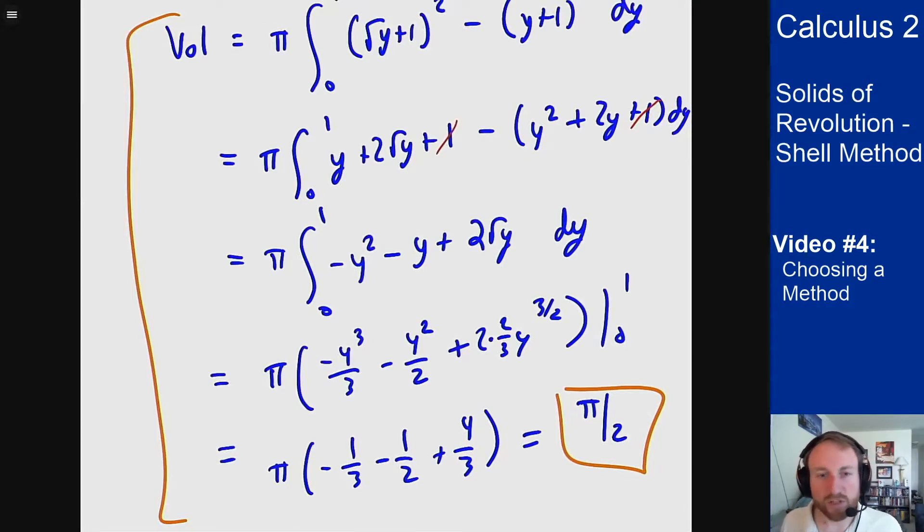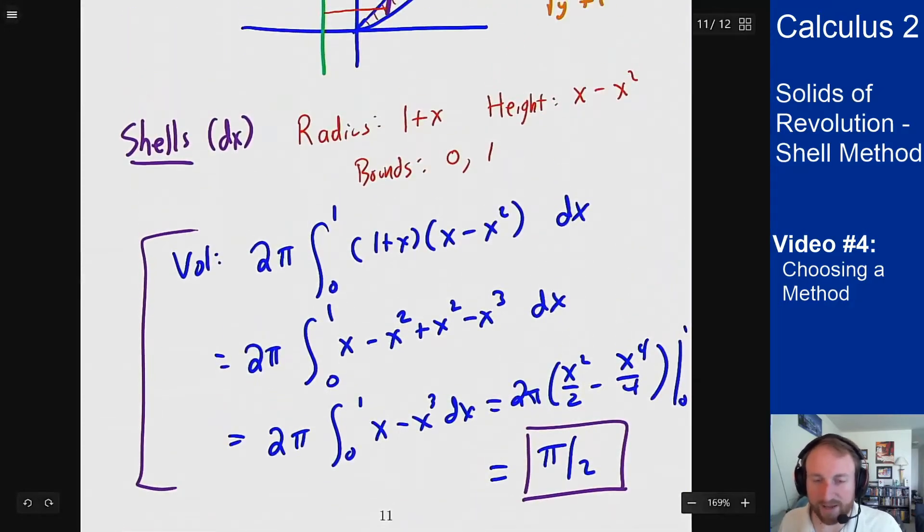But the question is which of these two do you think is easier? In general I will say it's usually easier not to switch the variables of the function. So it'd be much easier just to do this problem by shells because I was already given these bounds as y equals f of x. I could then put those in and be done and not have to solve out for the square root of y.